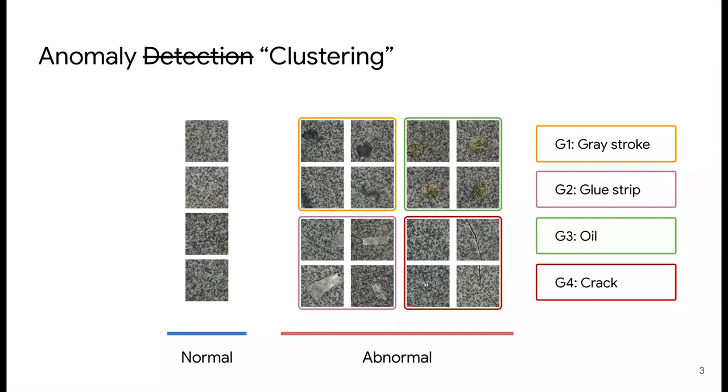For example, we not only want to group these images into normal and abnormal, but also want to further group abnormal images into different clusters, each of which represent different anomaly types, such as gray stroke, glue strip, oil, or the crack on the surface of the tile.